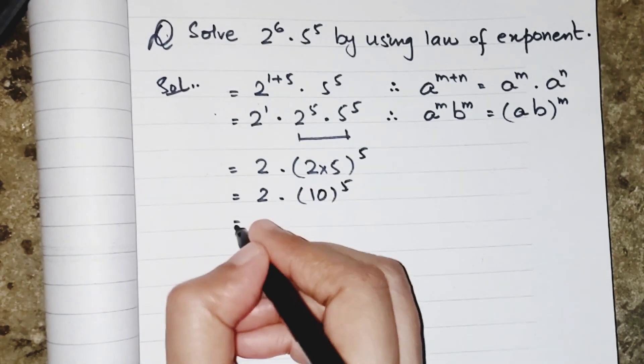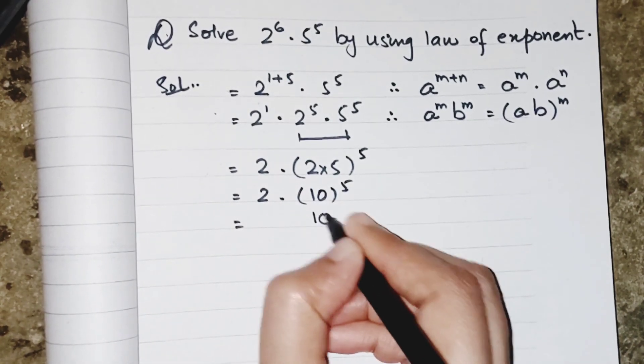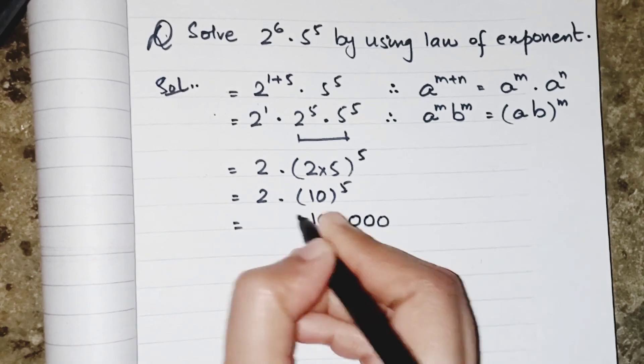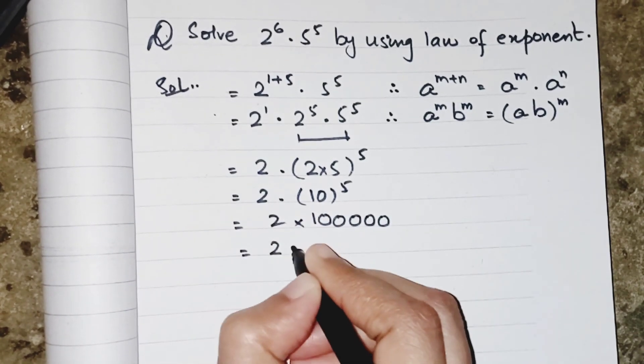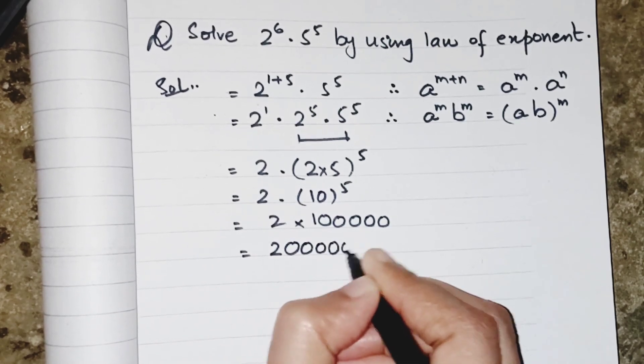10 power 5 means 5 zeros: 1, 2, 3, 4, 5. And when it will be multiplied by 2, the result is 200000.